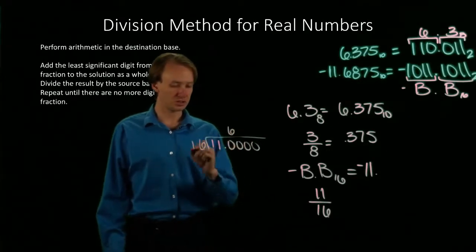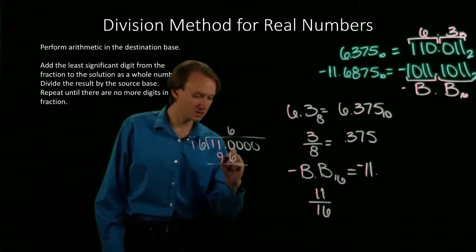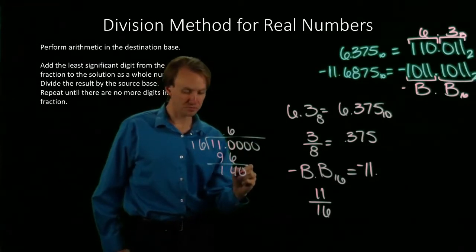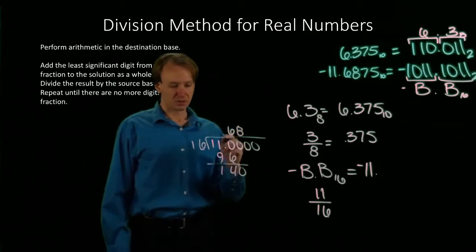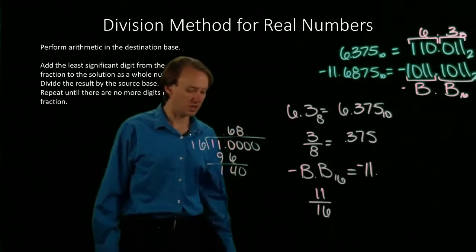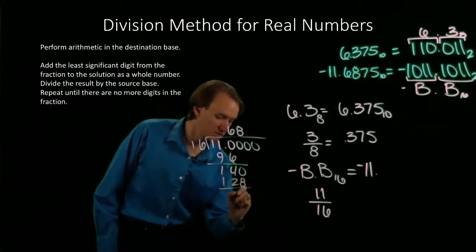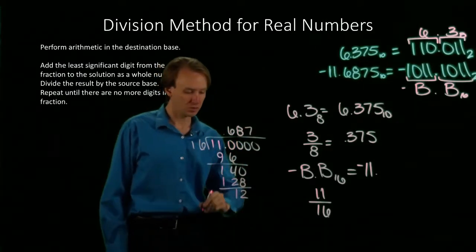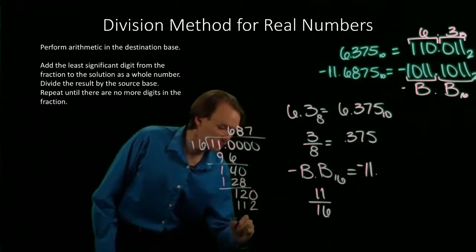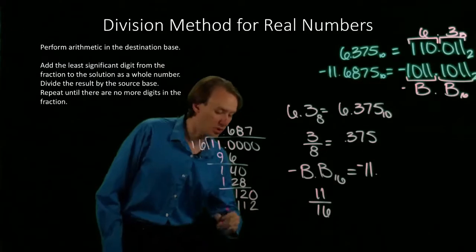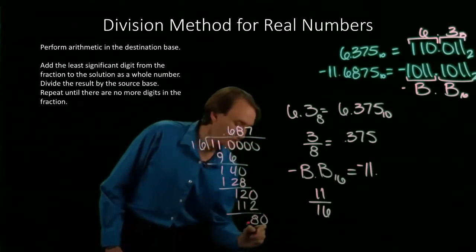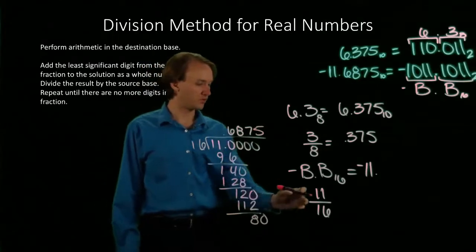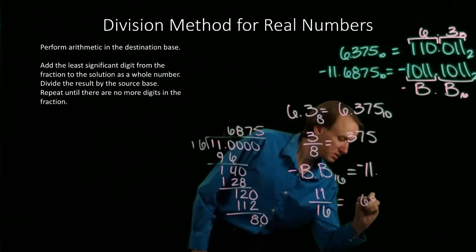So 6 times 16 will give me 96. Pull down a second 0. So 16 times 8 will be 32 more than that 96, or 128. 7 times 16 will give me 112. And then 16 times 5 will give me 80.